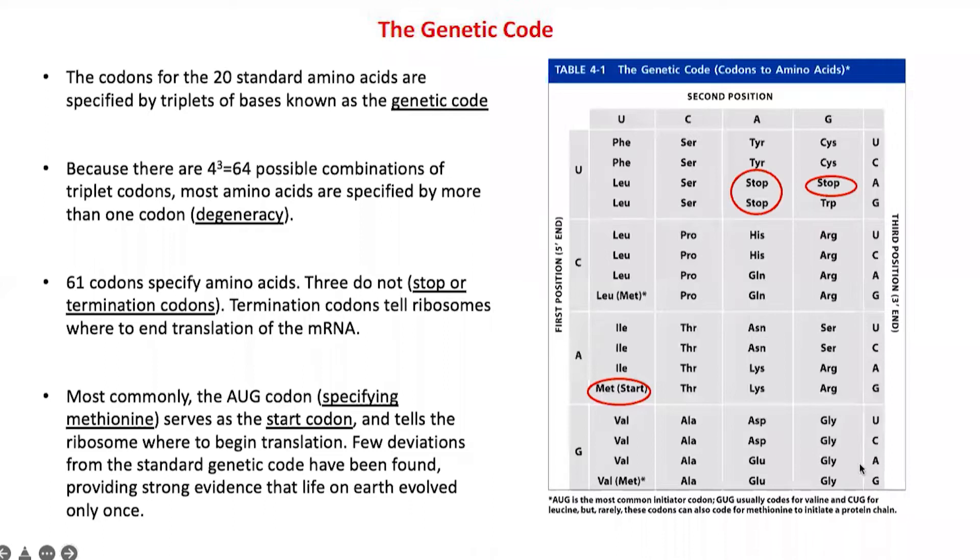More often than not, this genetic code is universal across all organisms. Mitochondria may have slight variations compared to eukaryotic cytoplasm, but these variations are very small.